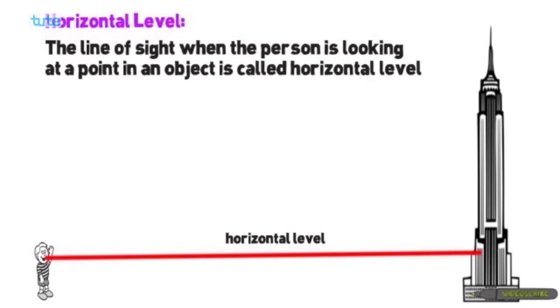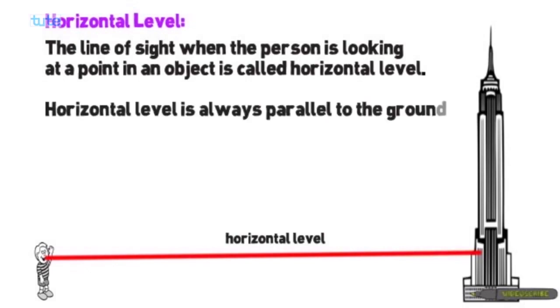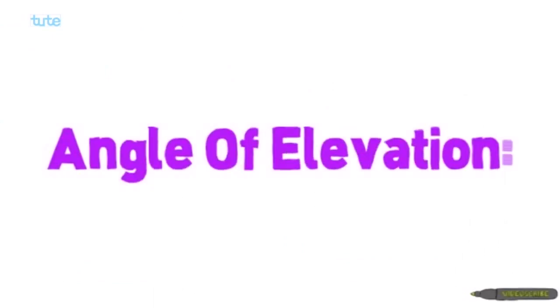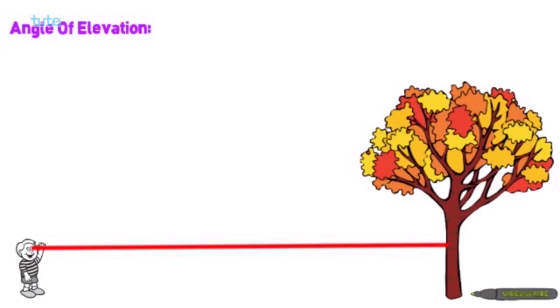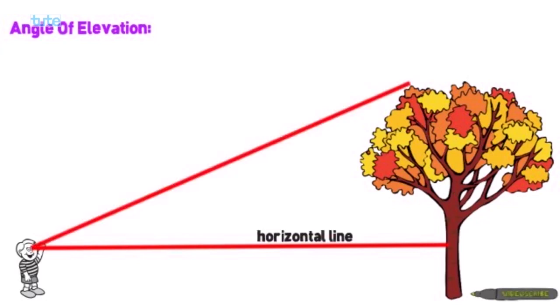Horizontal level is the line of sight when the person is looking at the point in an object. Horizontal level is always parallel to the ground. Now let's see what do you mean by angle of elevation. Consider a boy standing on the ground who is at a certain distance from a tree — this will be his horizontal level, and that boy is watching the top of the tree, so that line will be the line of sight.